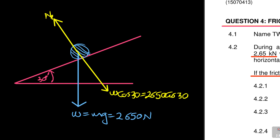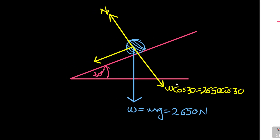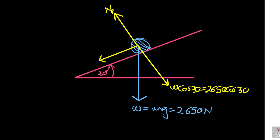And then going down the plane — let me use this straight line going down the plane — you also have W sin 30, which is equal to 2,650 sin 30. This means you need to always know these components.